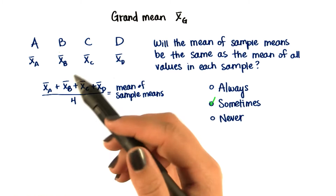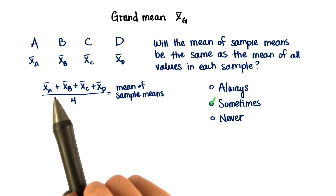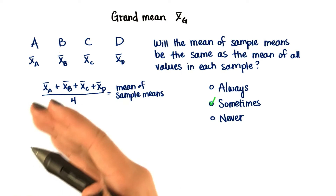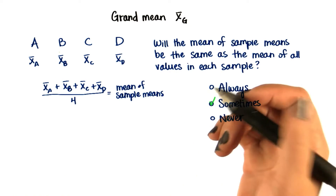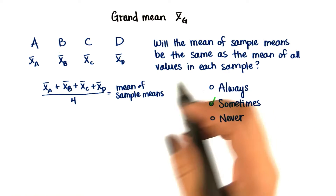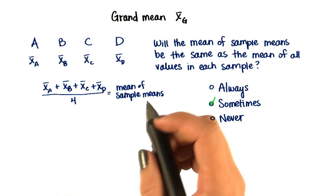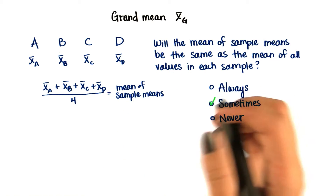However, when sample sizes are unequal, we have to find the grand mean by adding all the values from each sample and dividing by the total number of values — the sum of the sample sizes.